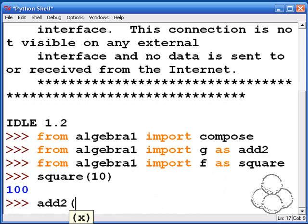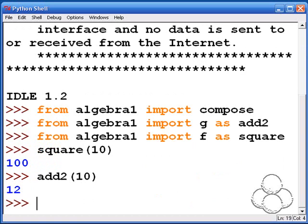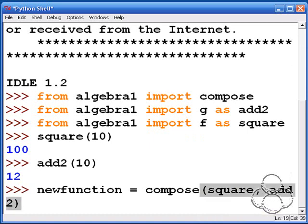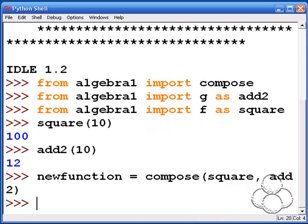Squaring 10 gives you 100 and adding 2 to 10 gives you 12. The compose function I didn't rename, just kept it as is. Here I'm going to take these newly named functions and again it's going to add two first to an argument and then square it.